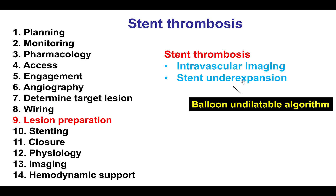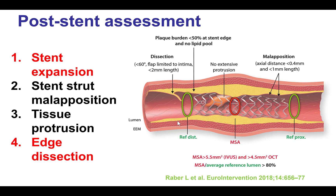Lesion preparation is important in stent thrombosis patients. Thrombectomy might be required, especially if there is large thrombus burden, and this is discussed in a separate video. If the stent is underexpanded, then measures should be taken to allow good expansion. If the stent is malapposed, then it should be post-dilated to become apposed to the vessel wall.